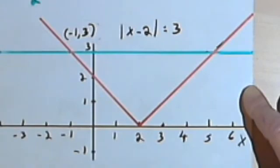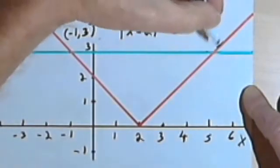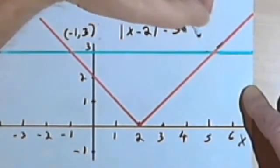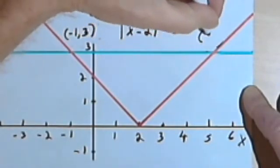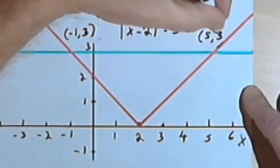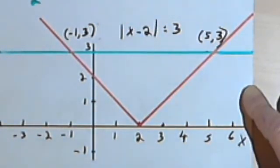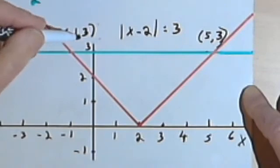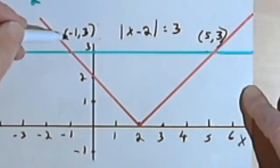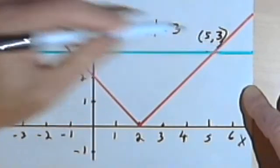If I look at the right side of the graph to find the second answer, I'm going to find that that has an intersection at the point 5 comma 3. And again, the 3 is kind of predictable. Okay, so I've got these two intersection points, negative 1 comma 3 and 5 comma 3.